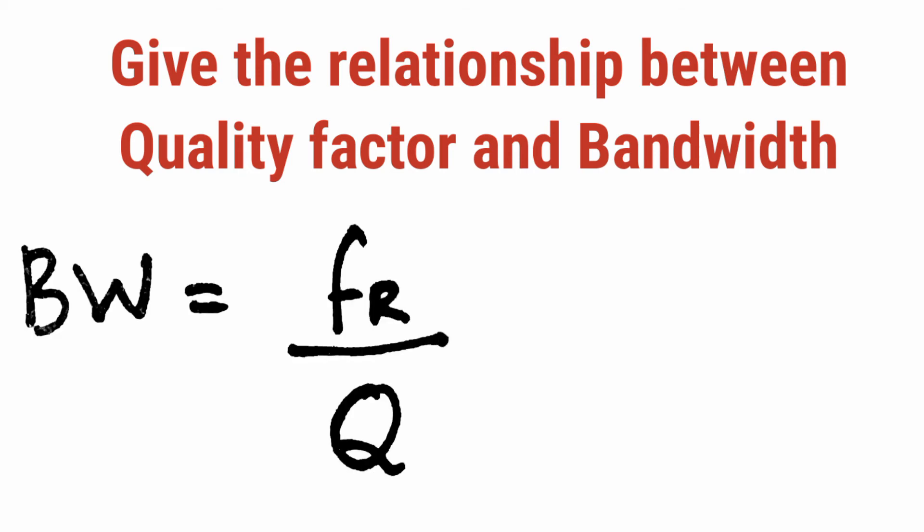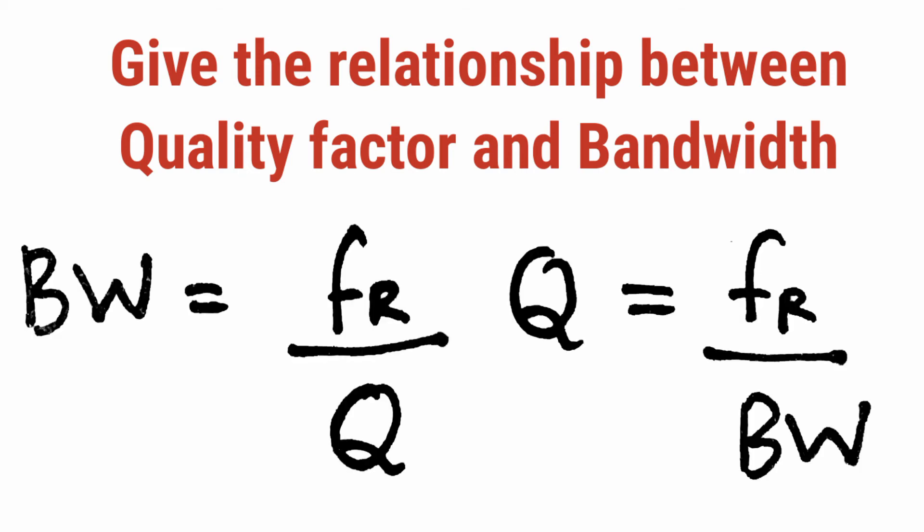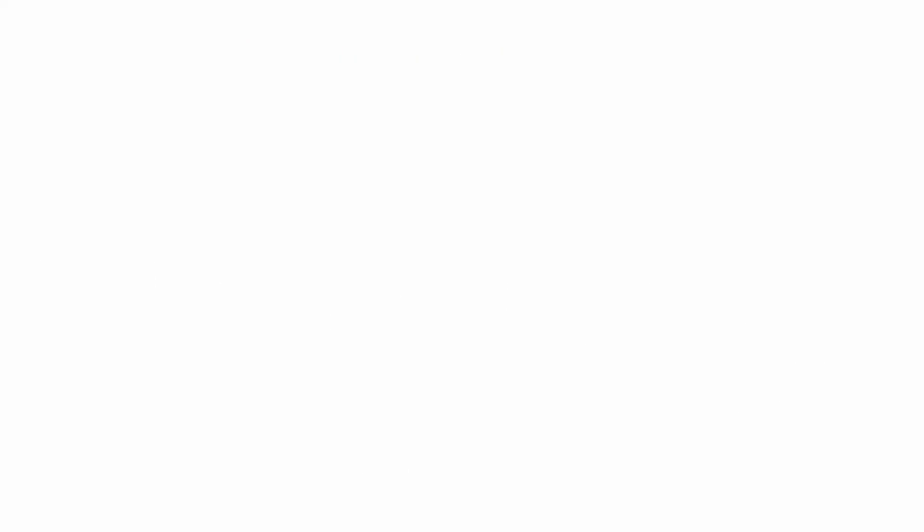What is the relationship between quality factor and bandwidth? Bandwidth is given as f_r / Q, which can be rearranged as Q = f_r / bandwidth. So if the bandwidth is doubled, the quality factor will be halved.